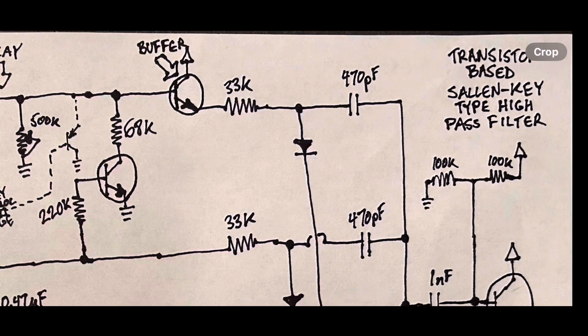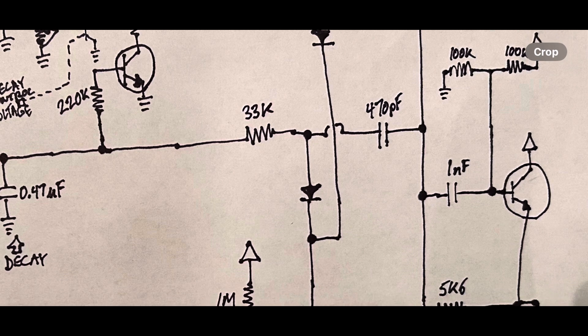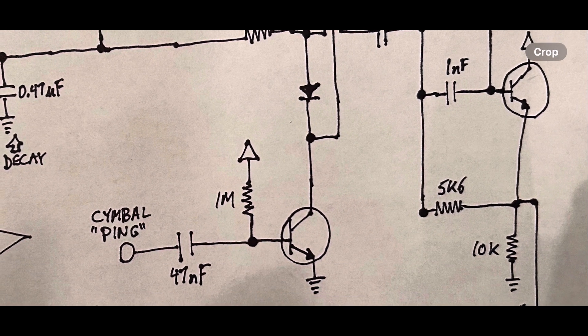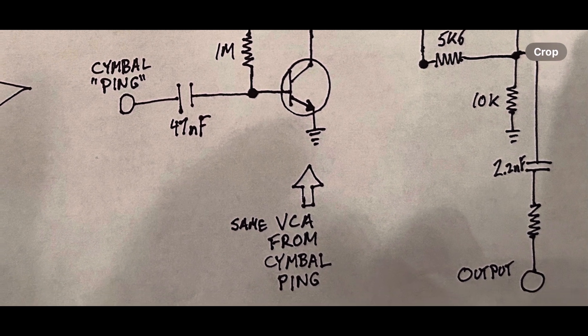The voltage-controlled amplifier is the exact same as the one for the cymbal sound. So the output actually comes out from the exact same output port as for your cymbal circuit, so you don't have to add extra components.